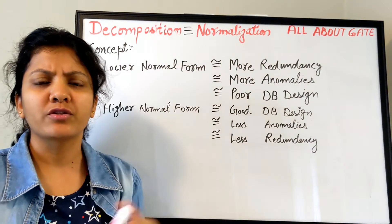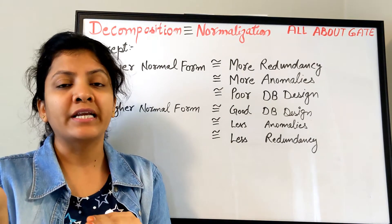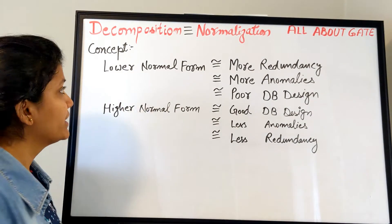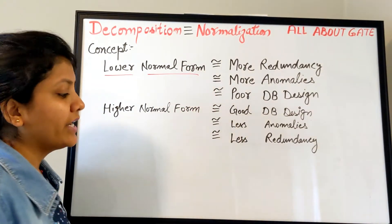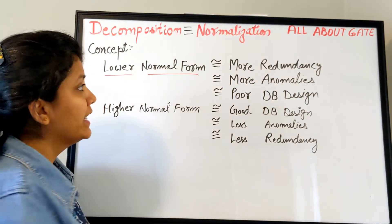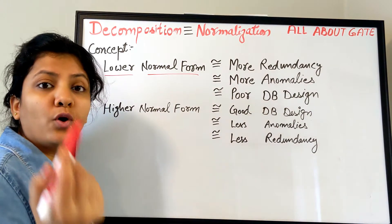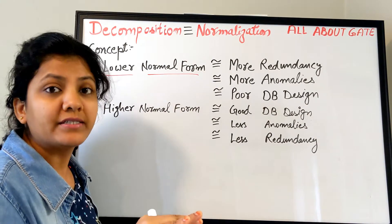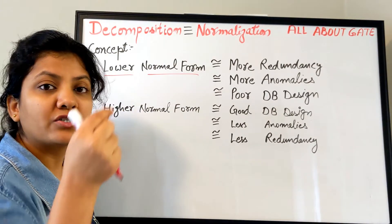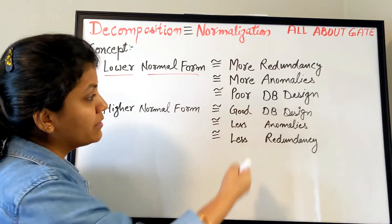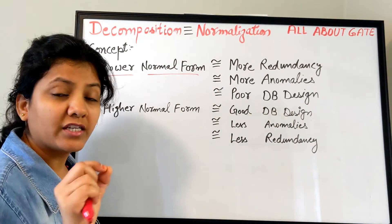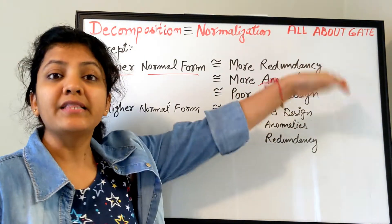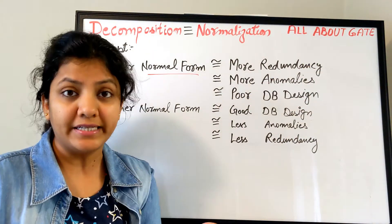Normalization is in other words decomposition of the table. If you have the lower normal form, it is equivalent to having more redundancy and more anomalies — insertion, updation, and deletion anomalies — as you have understood. Lower normal form also means more anomaly, and it is ultimately a reason because we have a poor database design.